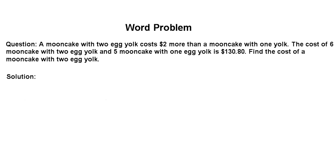We are going to deal with two types of moon cake. In one moon cake we are putting one egg yolk, and in the other we are putting two egg yolks. According to the condition, if you think about it logically, if you are putting more ingredients in a moon cake it is going to cost your client more compared to the other one.